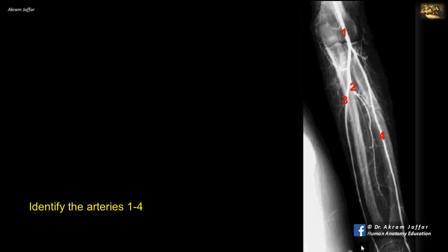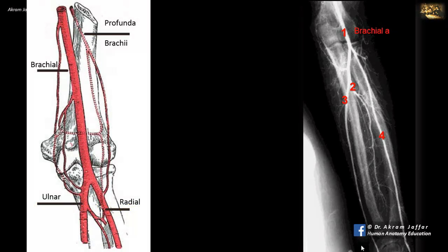Identify the arteries 1 to 4. This is an arteriogram of the distal end of the arm and the forearm. Artery 1 is located in front of the elbow joint in the cubital fossa — it is the brachial artery. The brachial artery ends opposite the neck of the radius in the inferior part of the cubital fossa, about 2.5 cm distal to the elbow skin crease, dividing into radial and ulnar arteries. Artery 4 is the radial artery and artery 3 is the ulnar artery. The radial artery continues as the direct line of the brachial artery, and at the beginning of the radial artery, it supplies a radial recurrent artery arising just distal to its origin.